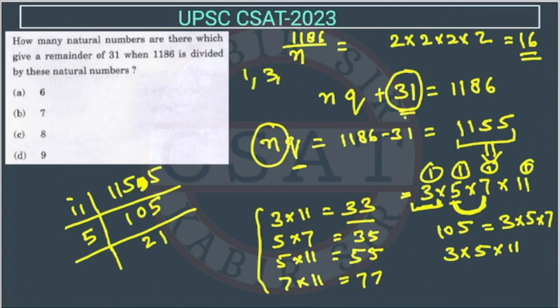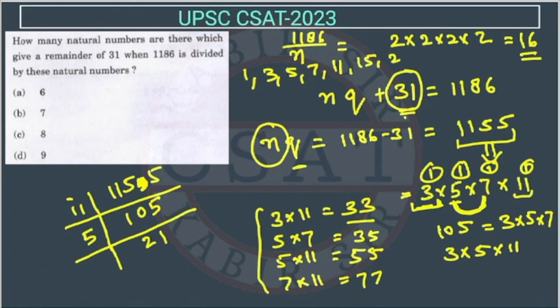Factors less than 31 are: 1, 3, 5, 7, 11, then combinations like 3×5=15 and 3×7=21 — that's 7 factors in total less than or equal to 31. So 16 minus 7 gives us 9. Total 9 valid combinations.